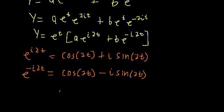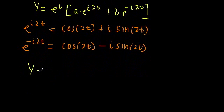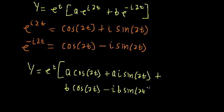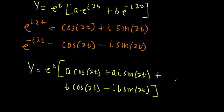So we can plug these two exponentials in their expanded form. We find that our solution is y equals e to the t times [a·cos(2t) + a·i·sin(2t) + b·cos(2t) - b·i·sin(2t)]. Now, once again, let's simplify it.